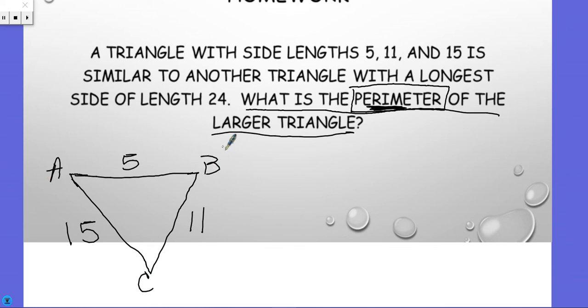It's similar to a triangle with the longest side of length 24. The longest side of this is 15, so that means the longer side of the other triangle needs to match the longest side of this triangle since they're similar. I'm going to call this D, E, F.